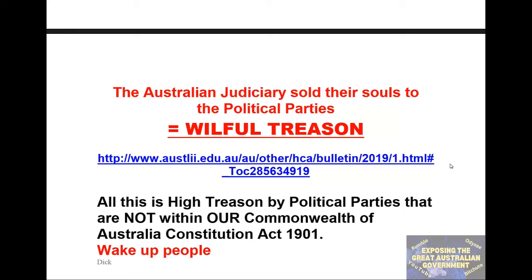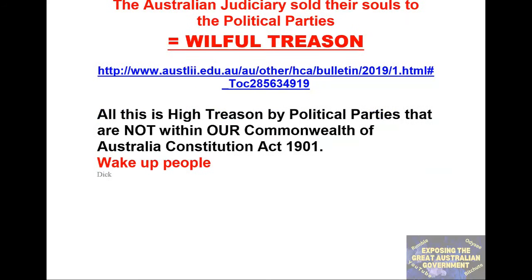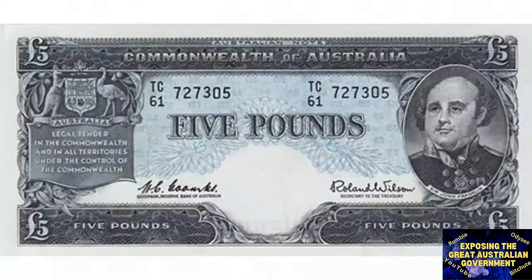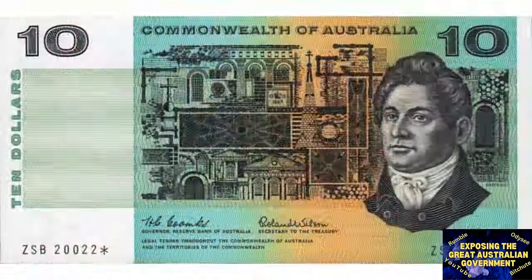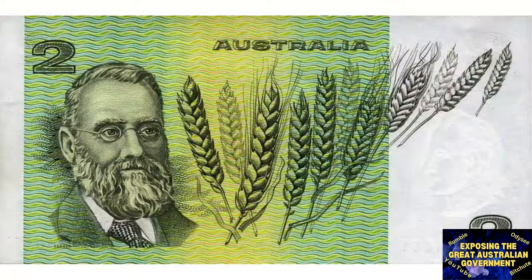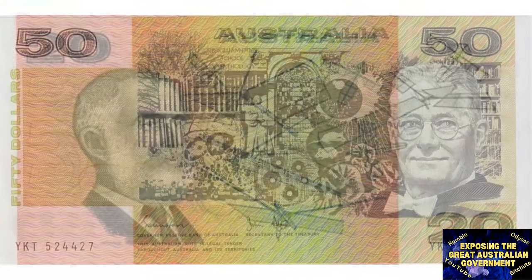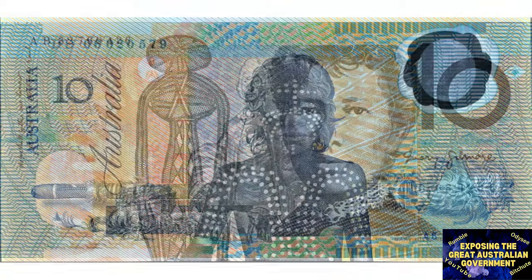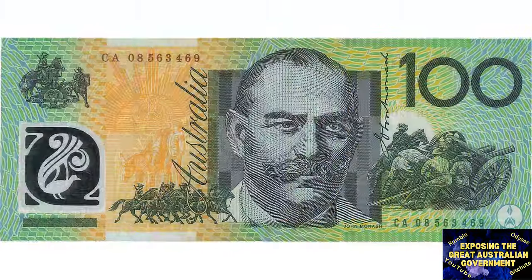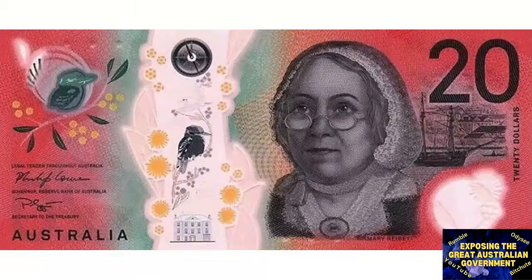Here's a website you can go and have a look at. All this is high treason by political parties that are not within our Commonwealth of Australia Constitution Act 1901, as proclaimed and gazetted. Wake up people. If you think that you are sitting at the same table as these filthy rich purported politicians and public servants, then you don't really have your eyes open. Now is the time to step up, before all our future generations are living under the control of these traitors and criminals.